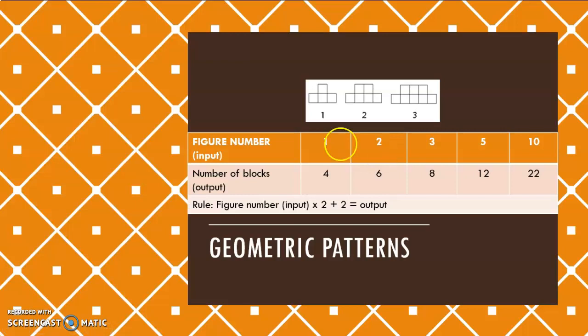So if I check at figure 1 with an input of 1, I have 4 blocks. At figure 2, so my input is 2, I have 6 blocks, so my output is 6. And number, or figure 3, my input is 3 and my output is 1, 2, 3, 4, 5, 6, 7, 8.